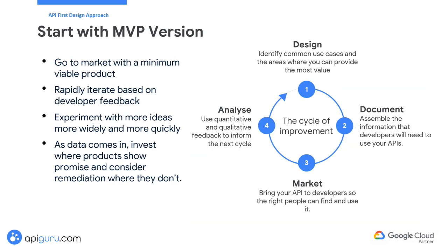Developing a minimum viable product version of your API and refining it based on developer feedback allows you to quickly define and build an API with enough features to be usable by early developers. This initial version helps validate the core concepts and functionality, enabling you to gather early feedback that helps identify issues, suggest improvements, and address usability challenges. By iterating based on this feedback, you can make targeted enhancements leading to a more intuitive and developer-friendly API, higher adoption rates, and more reuse. This approach also helps allocate resources more efficiently, focusing on refining the most critical aspects first rather than investing heavily in a fully-featured API that may need significant changes later.